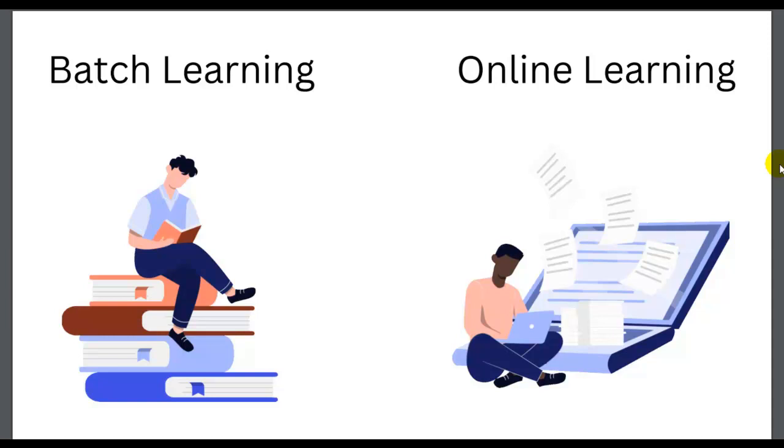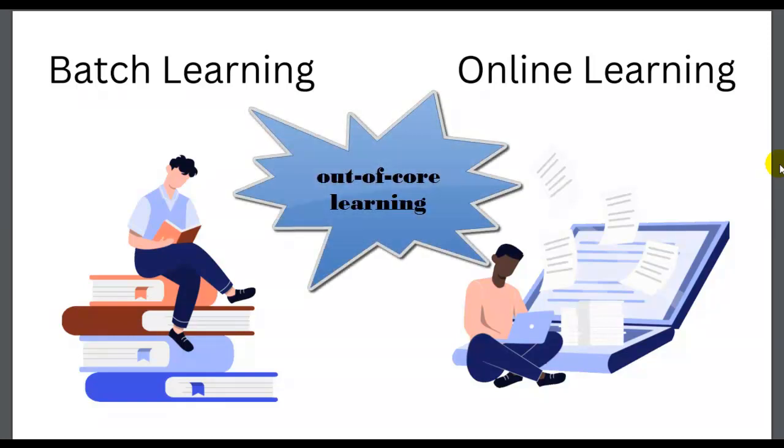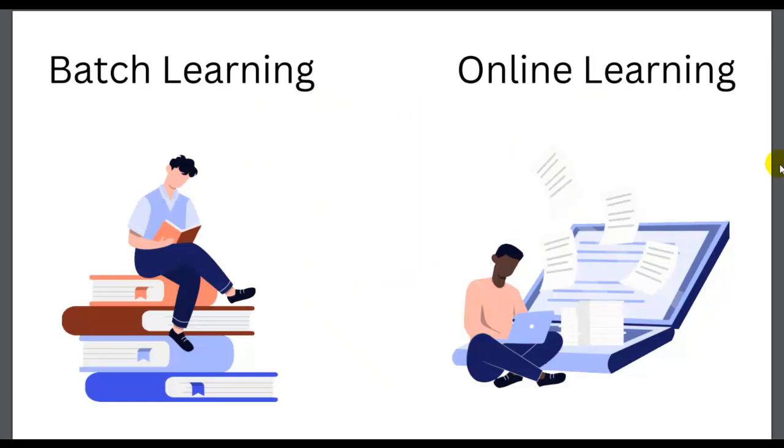Once an online learning system has learned about new data instances, it does not need them anymore, so you can discard them. This can save a huge amount of space. Online learning algorithms can also be used to train systems on huge datasets that cannot fit in one machine's main memory. This is called out-of-core learning.